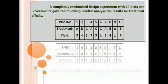Here they give 10 different plots and three different treatments. We consider the first treatment as A, second as B, and third as C. They also give yield. Plot number 1, treatment A, yield is 5. Similarly, the values are 4, 3, 7, 5, 1, 3, 4, 1. Our target is to analyze the results for treatment effect.